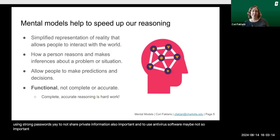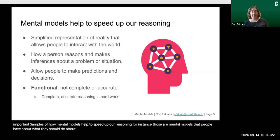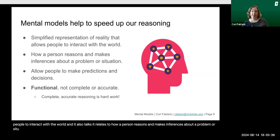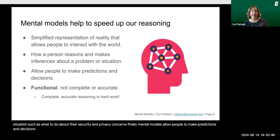Those are examples of how mental models help to speed up our reasoning — mental models that people have about what they should do about security and privacy. Mental models are simplified representations of reality that allow people to interact with the world. They relate to how a person reasons and makes inferences about a problem or situation, such as what to do about security and privacy concerns, and they allow people to make predictions and decisions very easily.